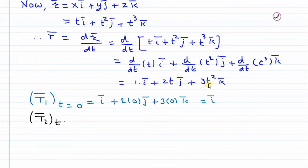Then you have to find out the tangent vector at t equals 1. So i bar as it is, in place of t it will be 1, and here in place of t it will be 1. So this is i bar plus 2j bar plus 3k bar.